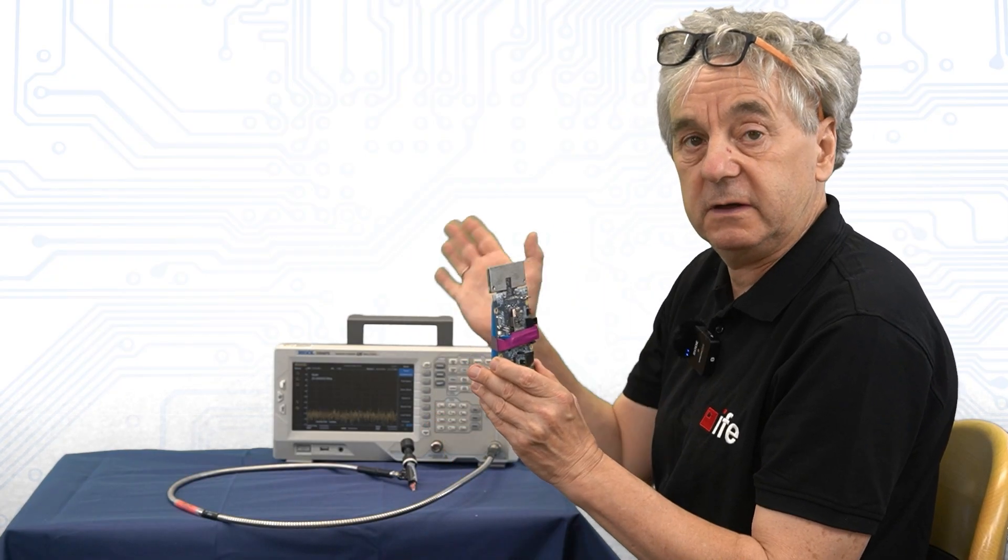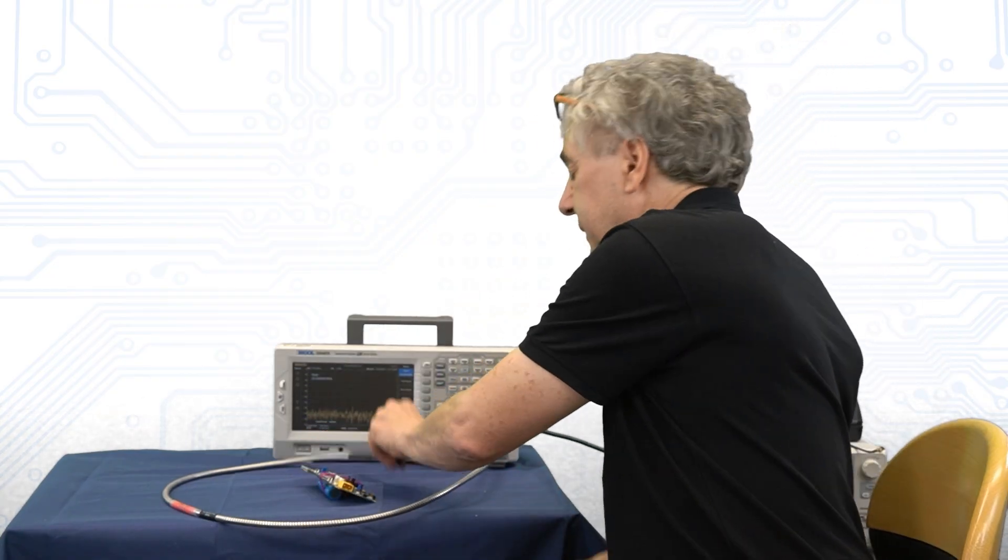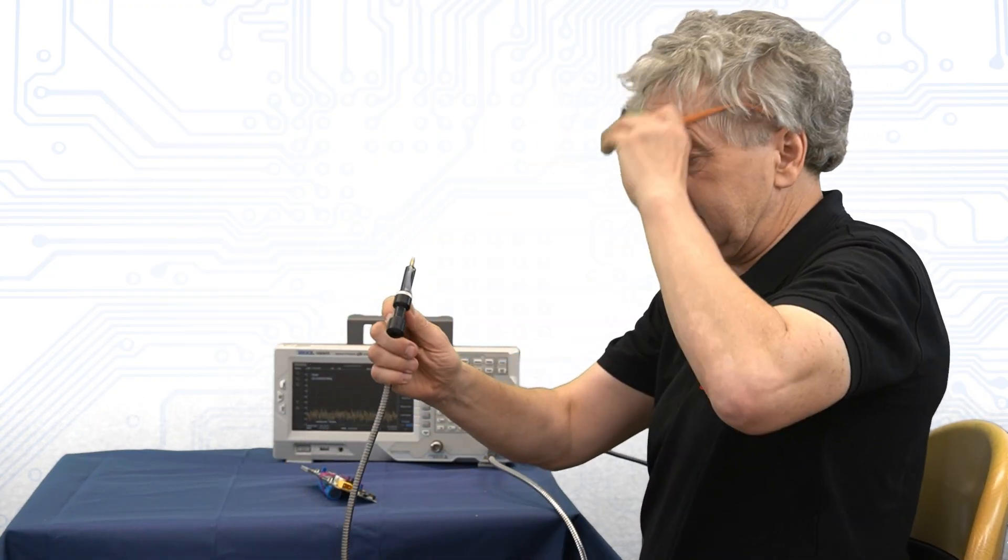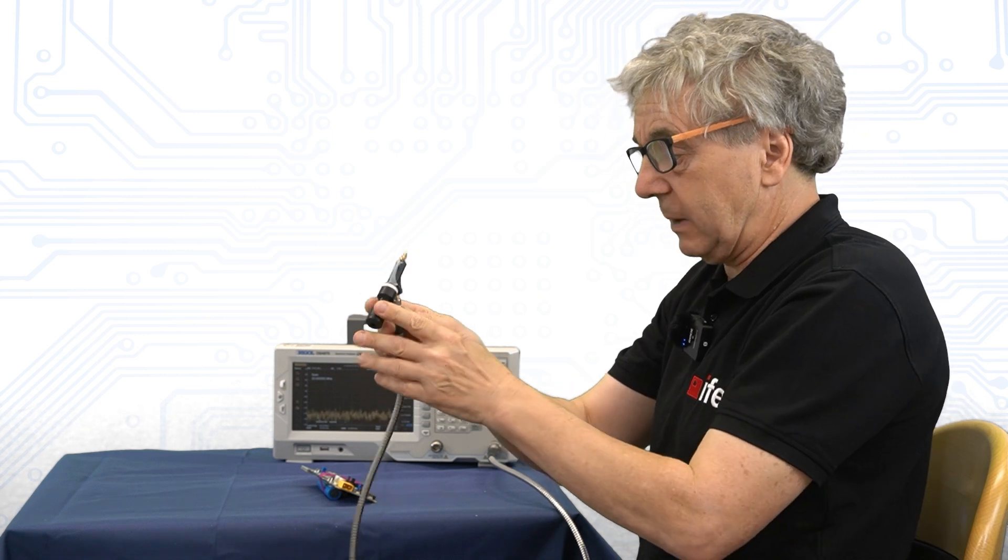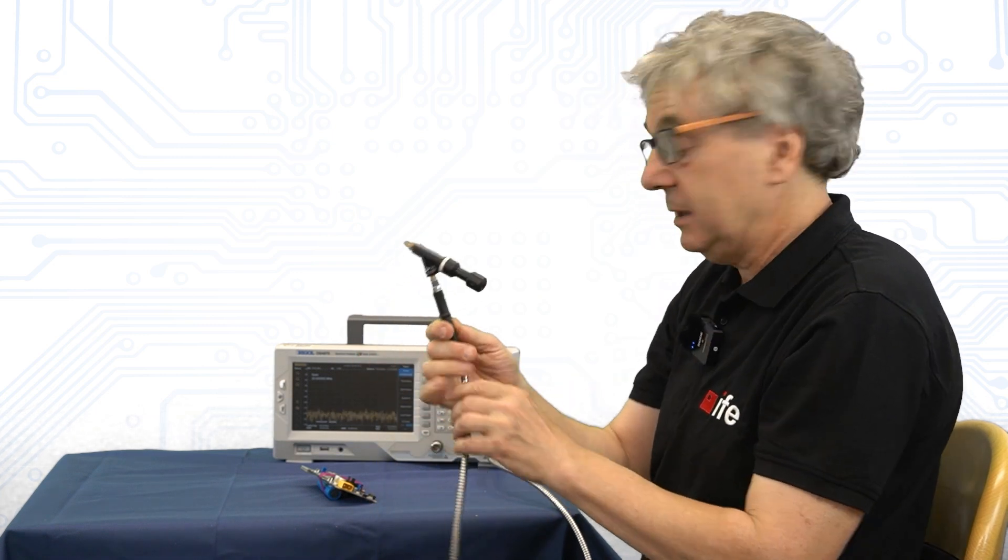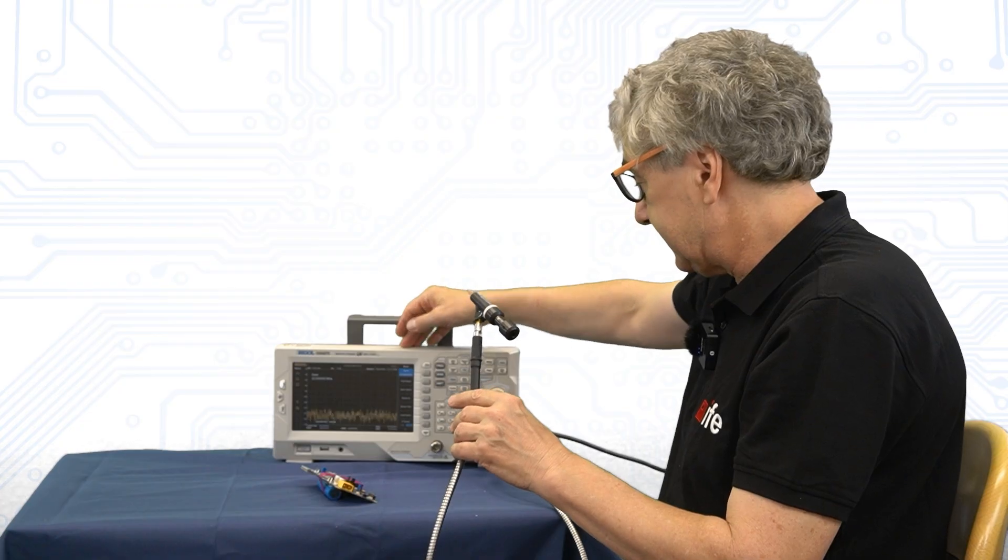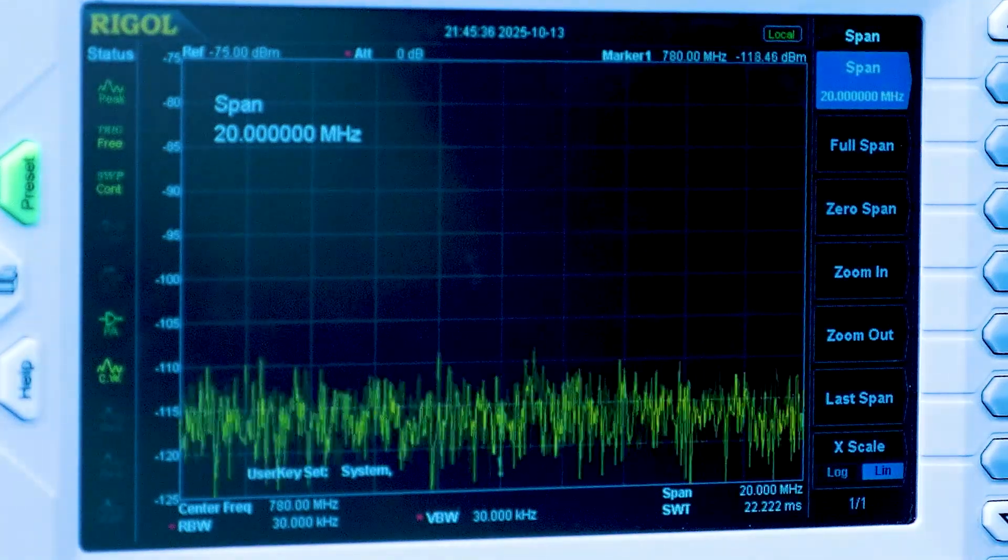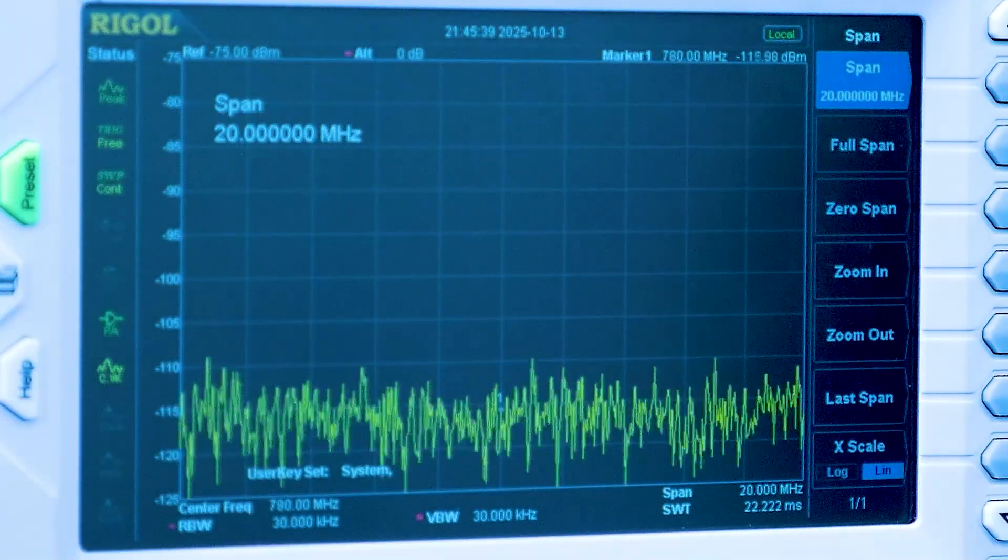This is the DUT we showed in the TEM chamber. Now I have a near field probe here. This is a magnetic near field probe, about 1x1 millimeter large. We attach it to our spectrum analyzer.